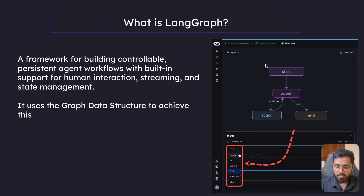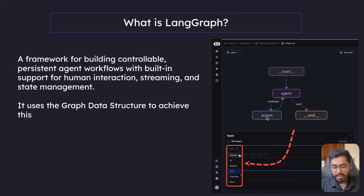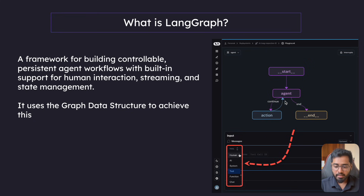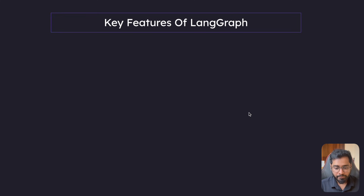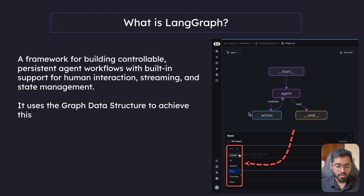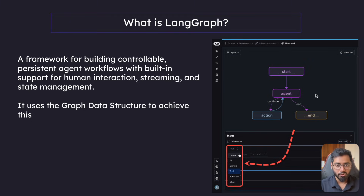This is a simple preview of how the graph data structure looks and how we can build agents. We have the start node, we have the agent, there is an action the agent takes, and then it can continue. Once it has reached the end point, it comes to an end. Just know for now that this is how the structure looks.